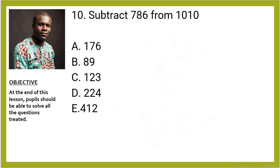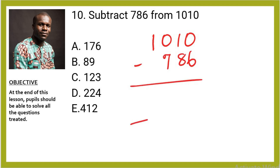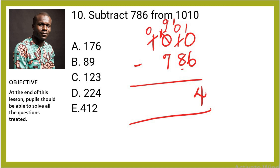Question 10: Subtract 786 from 1,010. We have 1,010 minus 786. Borrow as needed: 10 minus 6 is 4; borrow from the tens — 10 minus 8 is 2; 9 minus 7 is 2. The answer is 224, which is option D.